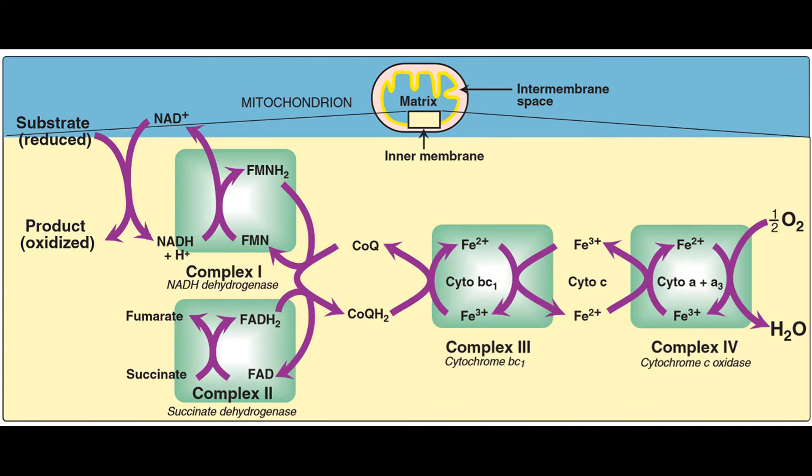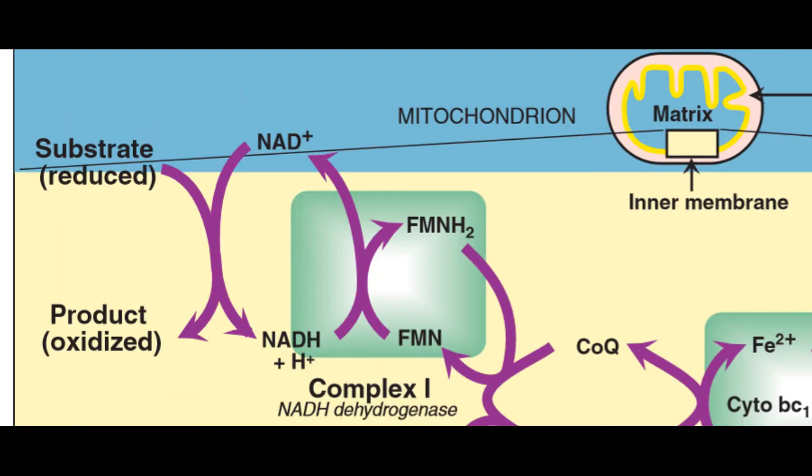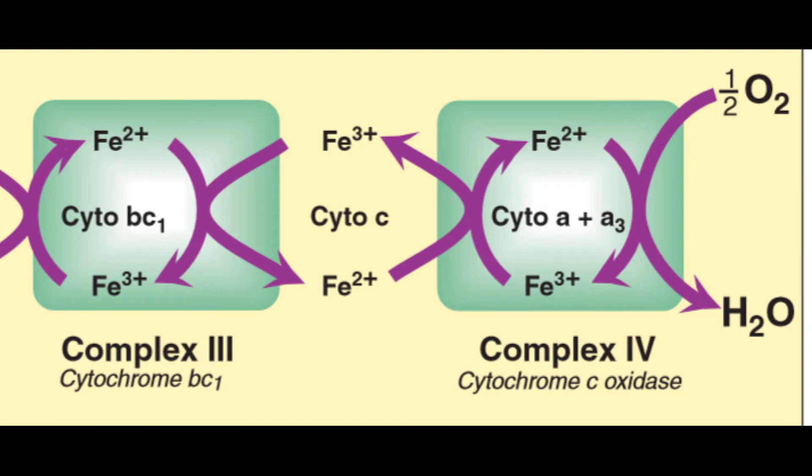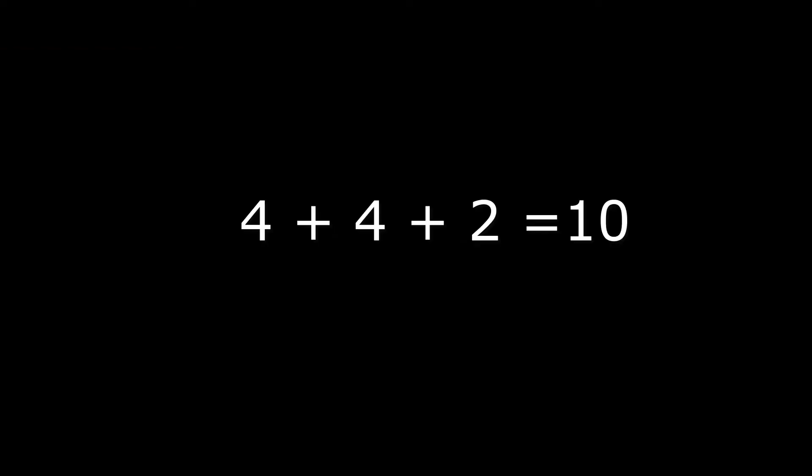The electrons ultimately combine with oxygen and protons to form water in the fifth complex. Let's see how this works starting with NADH. Complex 1 is NADH dehydrogenase, which removes the hydrogen from the NADH. In this complex, NADH gives off four hydrogen ions. Moving on to complex 3, it surpasses complex 2. Complex 3 is cytochrome bc1. In this complex, it gets oxidized and gives four hydrogen ions. In complex 4, which is cytochrome c oxidase, NAD gets oxidized and gives us only two hydrogen ions.